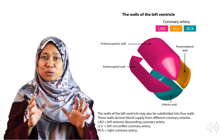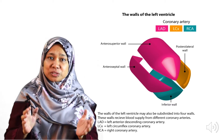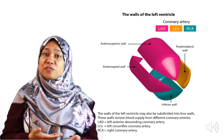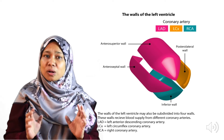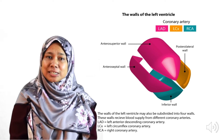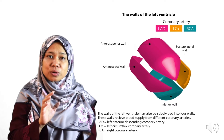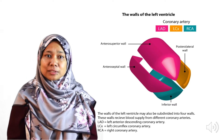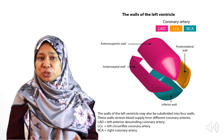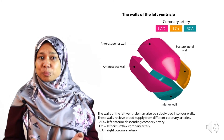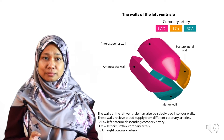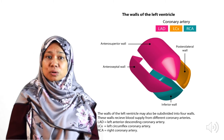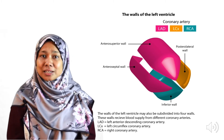We can divide the walls of the left ventricle into four walls: the anterior superior wall, the anterior septal wall, the inferior wall, and the lateral wall. All four walls are supplied by three arteries. The anterior superior and anterior septal walls are supplied by the left anterior descending artery. The inferior wall is usually supplied by the right coronary artery via the posterior descending artery, and sometimes by the left circumflex artery. The lateral wall is supplied by the left circumflex artery.